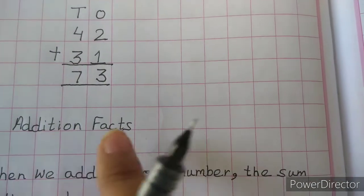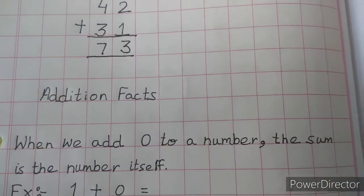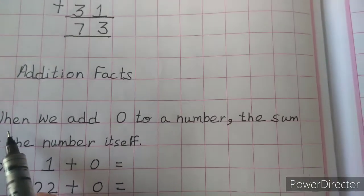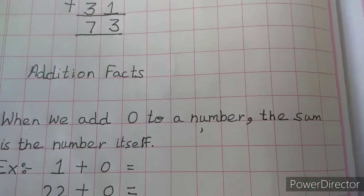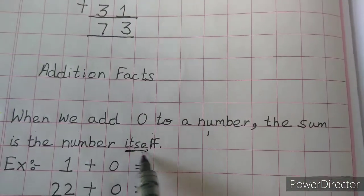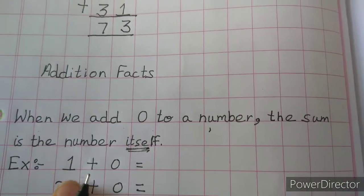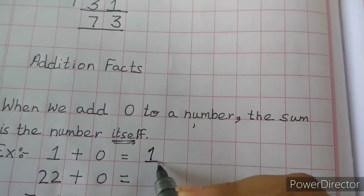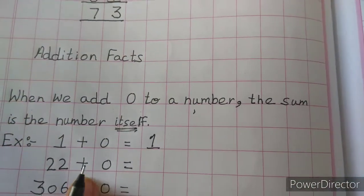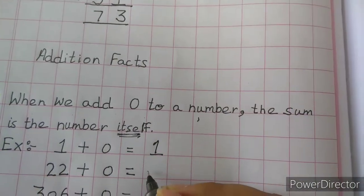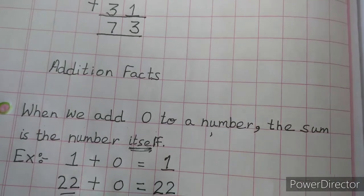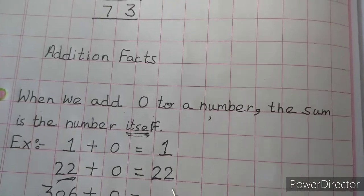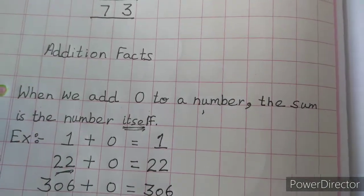The next topic for today is addition facts. The first addition fact is: when we add 0 to a number, the sum is the number itself. For example, 1 plus 0 equals 1. Similarly, 22 plus 0 equals 22, and 306 plus 0 equals 306 — always the number itself.